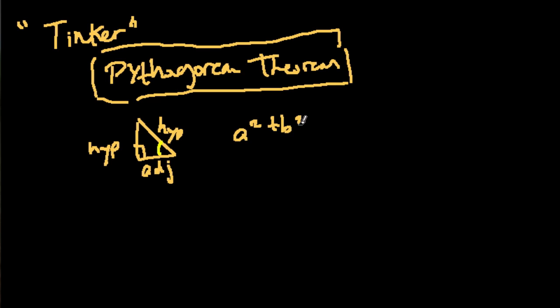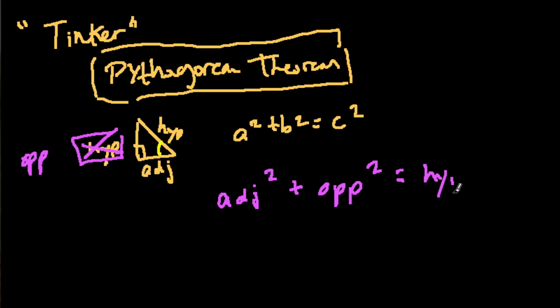So the Pythagorean theorem says a squared plus b squared equals c squared. But we are going to write that as the adjacent side squared plus the—I wrote hypotenuse twice, this should be the opposite side—plus the opposite side squared equals the hypotenuse squared. And now we're going into our trig identity language. You can see it already. What if I divide everything by the hypotenuse squared? What happens then?